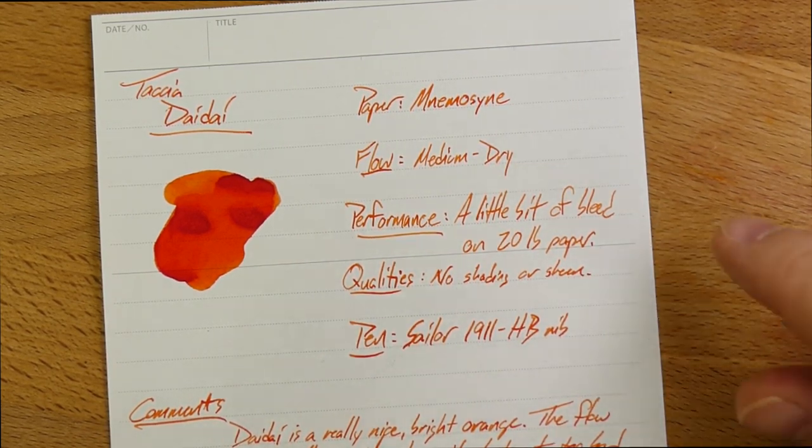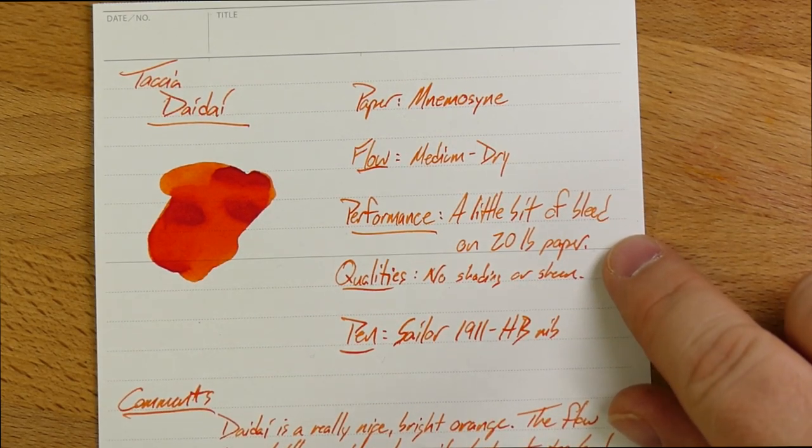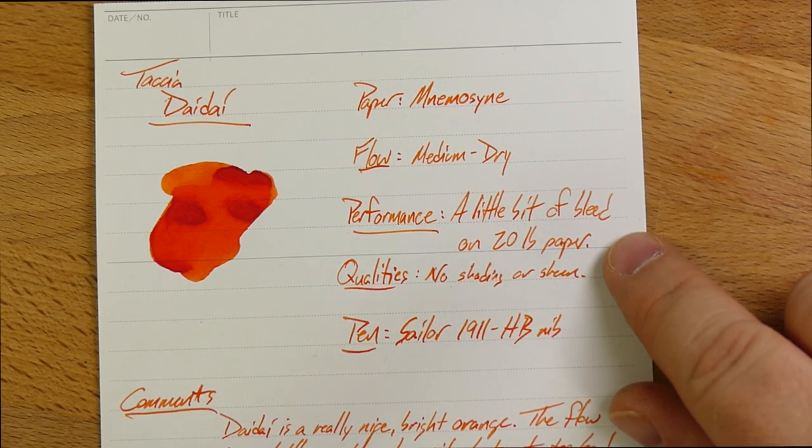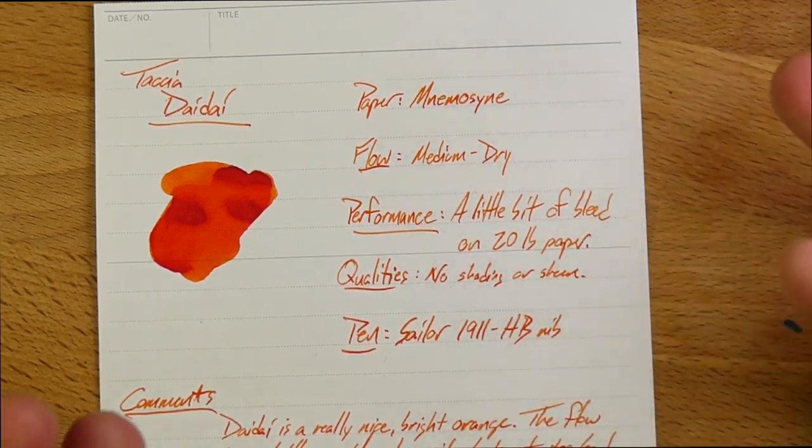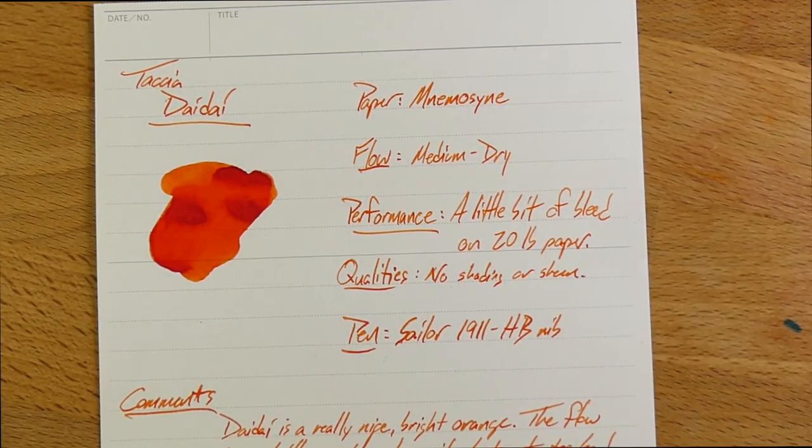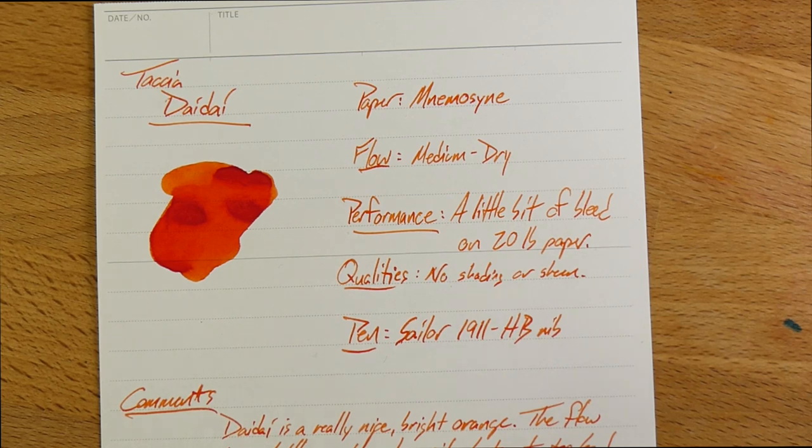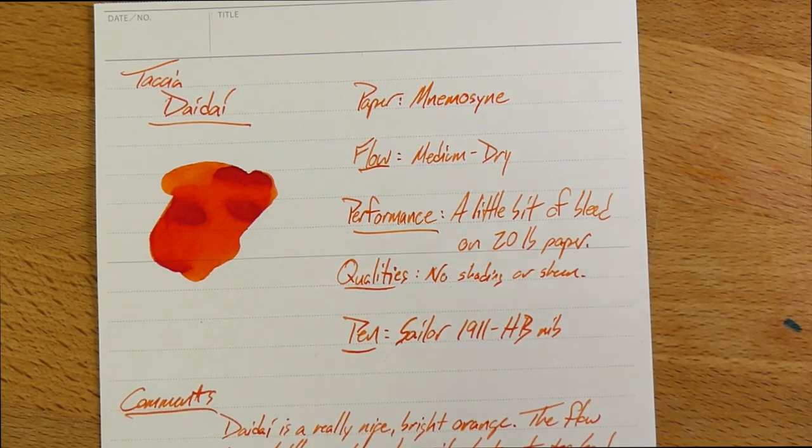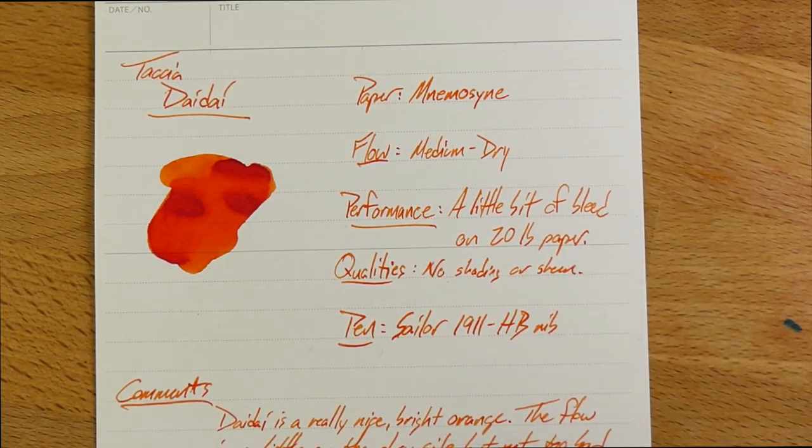And the other thing is that I get a little bit of bleed on the 20-pound crappy copy paper that I use from Staples. This is like 30% recycled, what you find in offices, what they order probably without thinking too much about it. So, a little bit of bleed there. Not terrible, not egregious, but you definitely get some. We'll show that to you here in just a little bit.